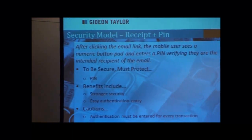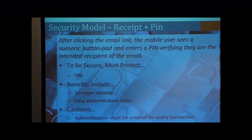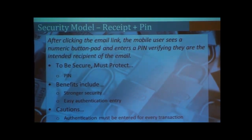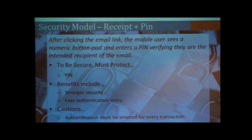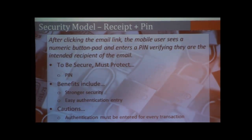I think that a really good compromise solution is the receipt plus PIN solution. This would work very similarly to the receipt except that when you actually click the button, instead of going right to the page, you see a numeric keypad, you punch in four numbers, and then you see the target page. To be secure there, what you're protecting now is your PIN — that becomes the token. The benefits are you have stronger security than just receipt-based, and it's fairly easy to enter the authentication — you're not using the tiny keyboard with blanked-out password fields.